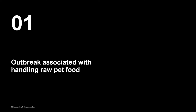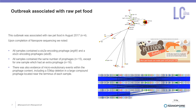The first outbreak was associated with handling raw pet food, occurring in August 2017. We sequenced four samples and found that all contained the same number of prophages except one — so there was variation in the number of prophages within each sample, and within the content of those prophages there was also variation. One sample had a 53 kilobase deletion in a large compound prophage near the terminus.